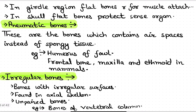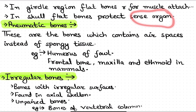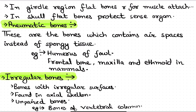In the girdle region, flat bones serve for muscle attachment, while in the skull they protect organs like the brain. Pneumatic bones contain air spaces instead of spongy tissue, making them lightweight. Examples include the humerus of birds and the frontal bone, maxilla, and ethmoid in mammals, which contain air cavities.